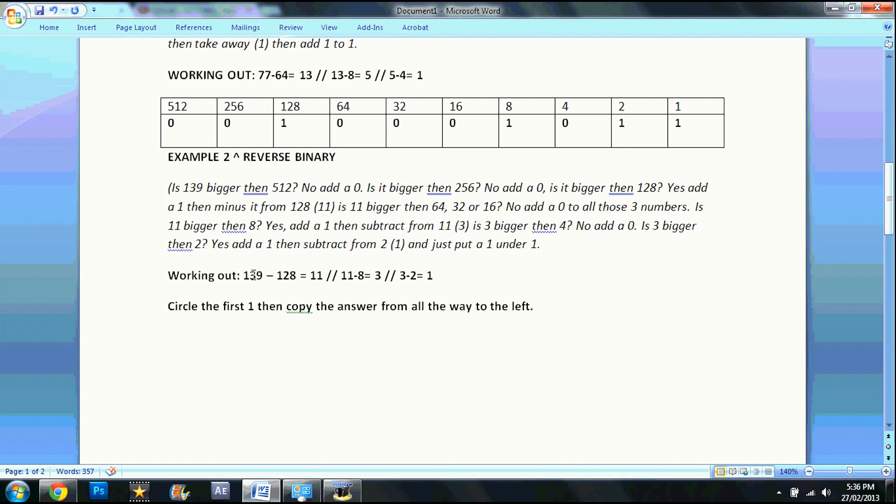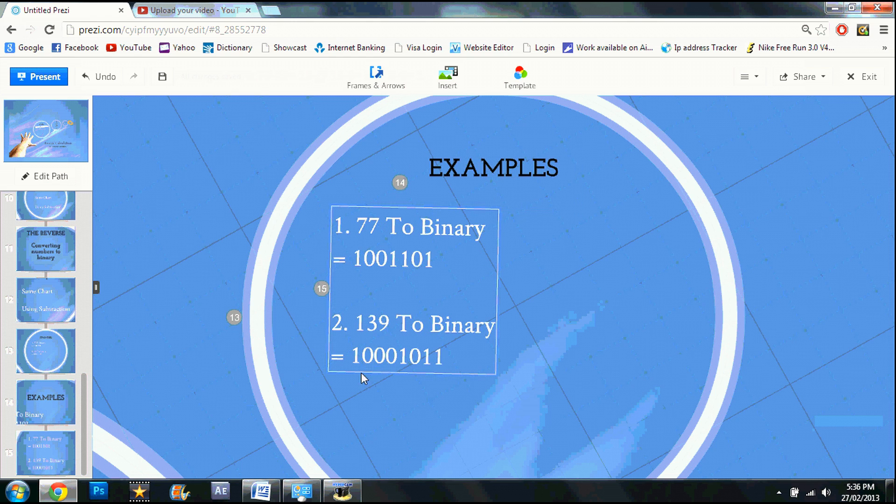Here's the working out if you need it. Circle the first 1. So here, remember 1 representing on. You cannot start it with a 0. So ignore the two 0s and then copy the answer from there. 1, 0, 0, 0, 1, 0, 1, 1. I'm just going to do two examples here. And that's it. Thank you for watching. Toodaloo.